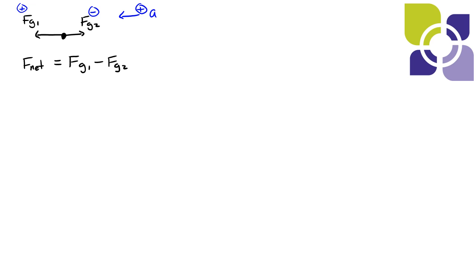So now we can go ahead and because this is for the system as a whole in our F net statement ma is the mass of the whole system times the acceleration and then we have Fg1 would be m1g minus the force of gravity acting on mass two which is m2g. The mass of the system I'm going to rewrite that as just m1 plus m2 just the mass of everything that has mass in the system.